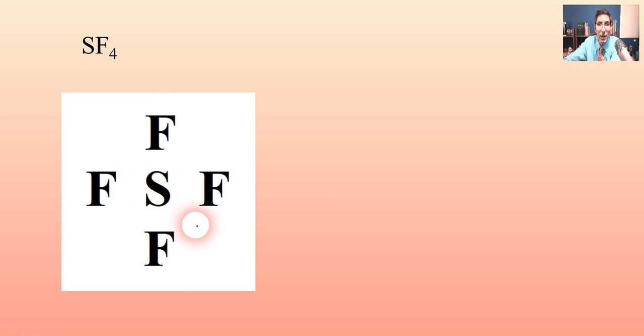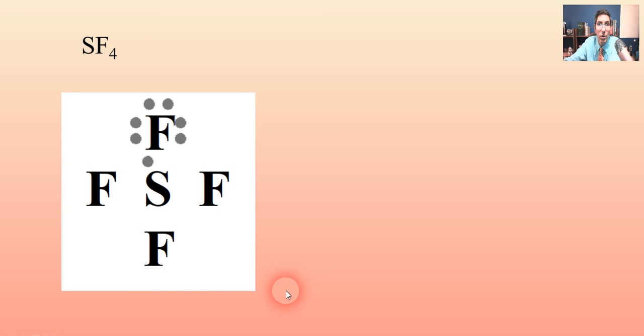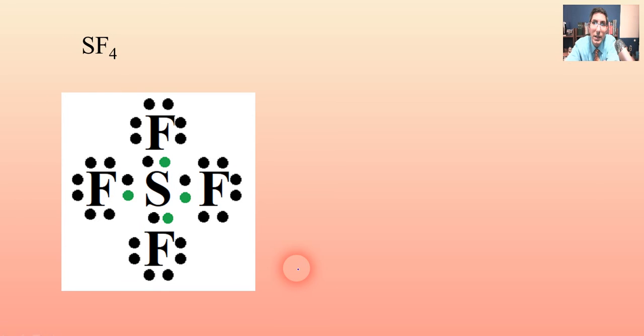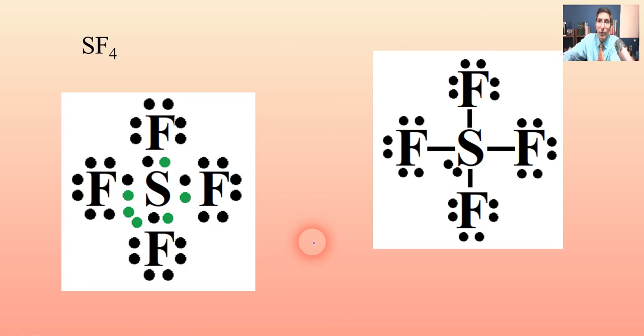Let's try another one: sulfur tetrafluoride. This is a very similar molecule — we put sulfur in the middle with four fluorines surrounding it. Starting with the atoms on the outside, every fluorine gets seven dots. Now sulfur gets six because it's in group 16. After placing four of those electrons we're out of room again, so following the same rule, we put the extra electrons as an unshared pair on the central atom — electrons five and six go right there on the sulfur.